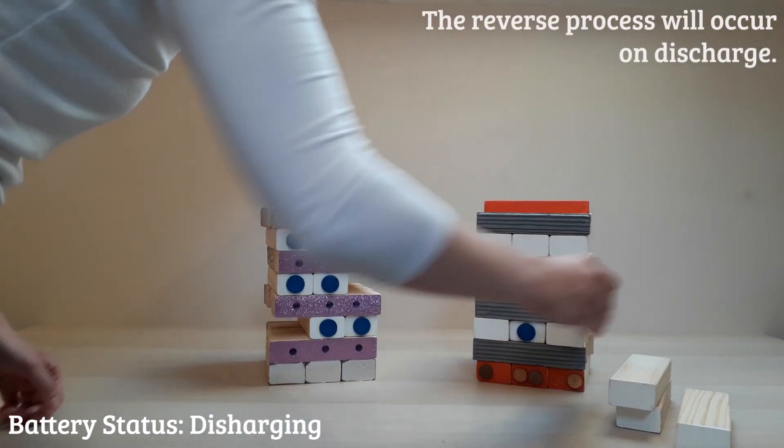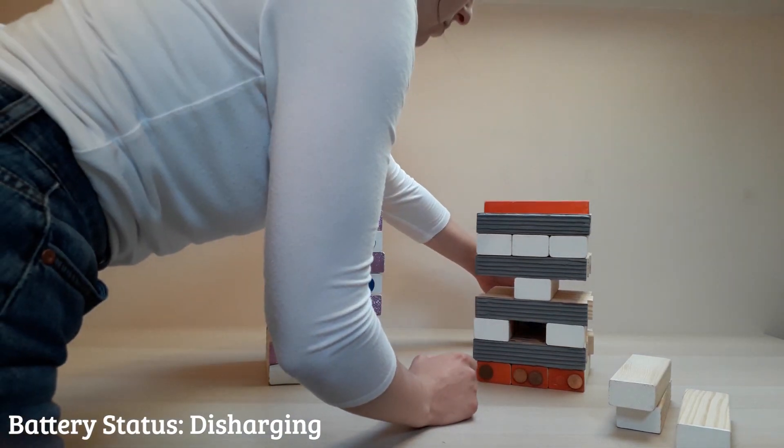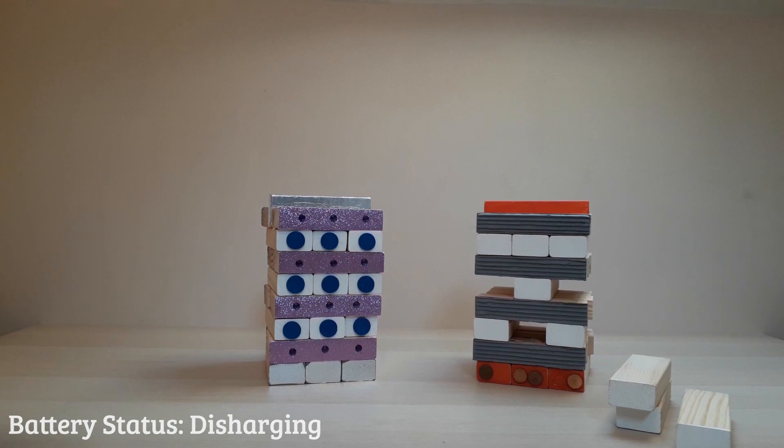On discharge, the lithium blocks are removed from the graphite electrode back to the oxide electrode. You can relate the steps of charging and discharging to everyday applications such as smartphone use.